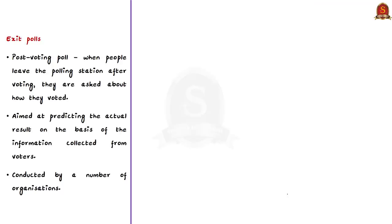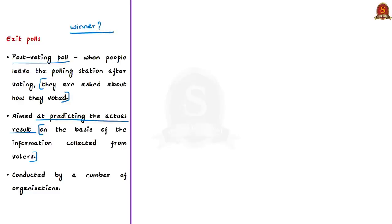An exit poll is a post-voting poll — that is, a poll conducted after vote casting for an election is done. In this poll, when people leave the polling station after voting, they are asked about how they voted. Such polls are aimed at predicting the actual result on the basis of information collected from voters after voting, and are conducted by a number of organizations including news reporting organizations and various newspapers.